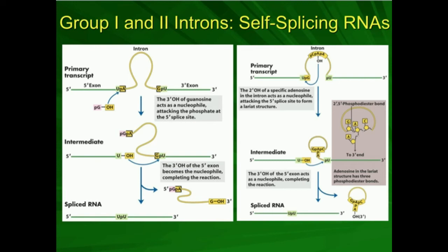Notice what happened. When the 2' OH attacked this 5' phosphate of the guanosine, that 2' hydroxyl happens somewhere in the middle of the intron — not at either end. Because of that, we get this looped structure, and this is termed a lariat. When we free the first exon and get the exon's 3' hydroxyl attacking the 5' phosphate of the second exon, we get the release of this lariat. Whereas in group 1 self-splicing introns, because we used a free guanosine intron cofactor, we didn't get the lariat — we just got a linear RNA intron chain. The intron chain here is a lariat because the attack comes from a 2' OH within the intron.